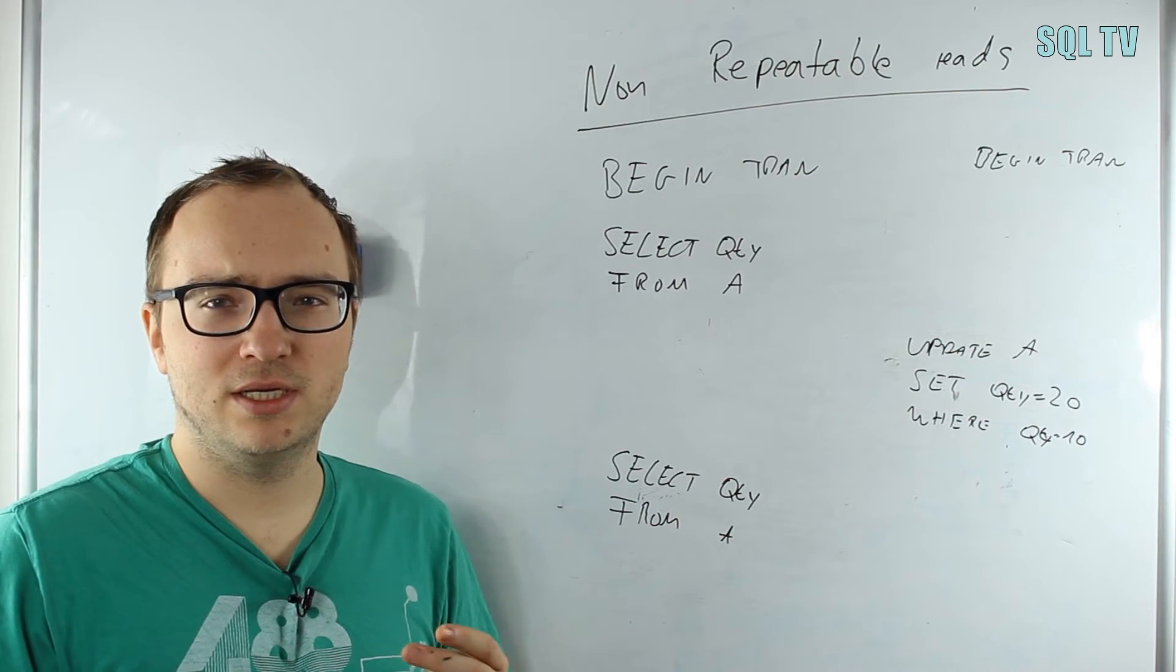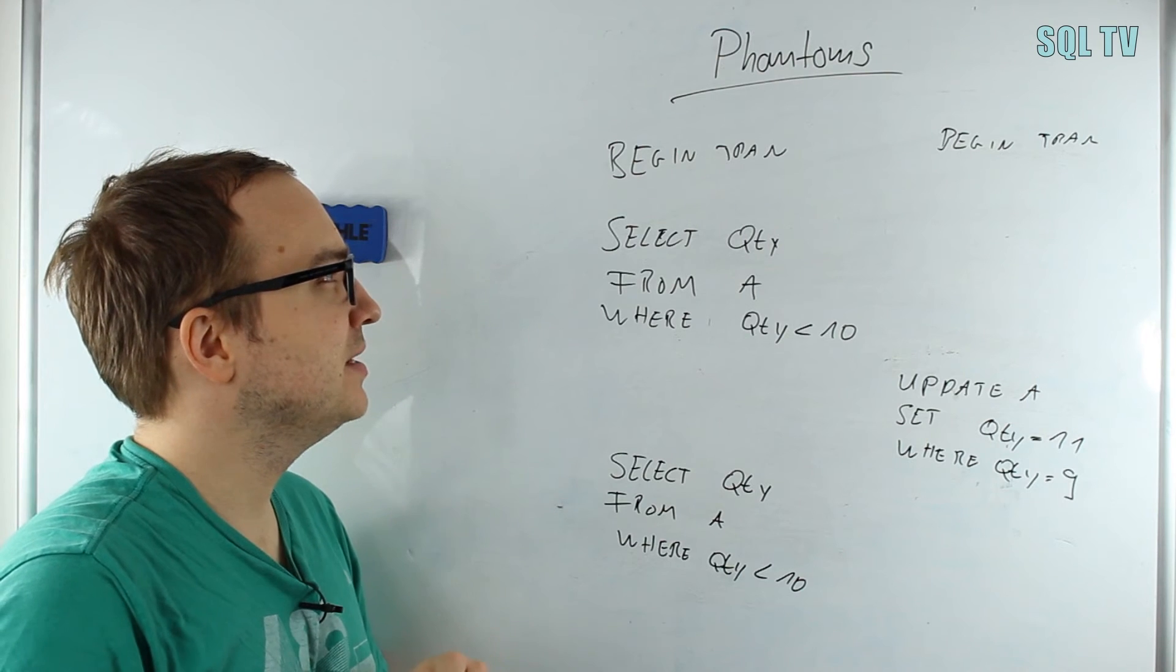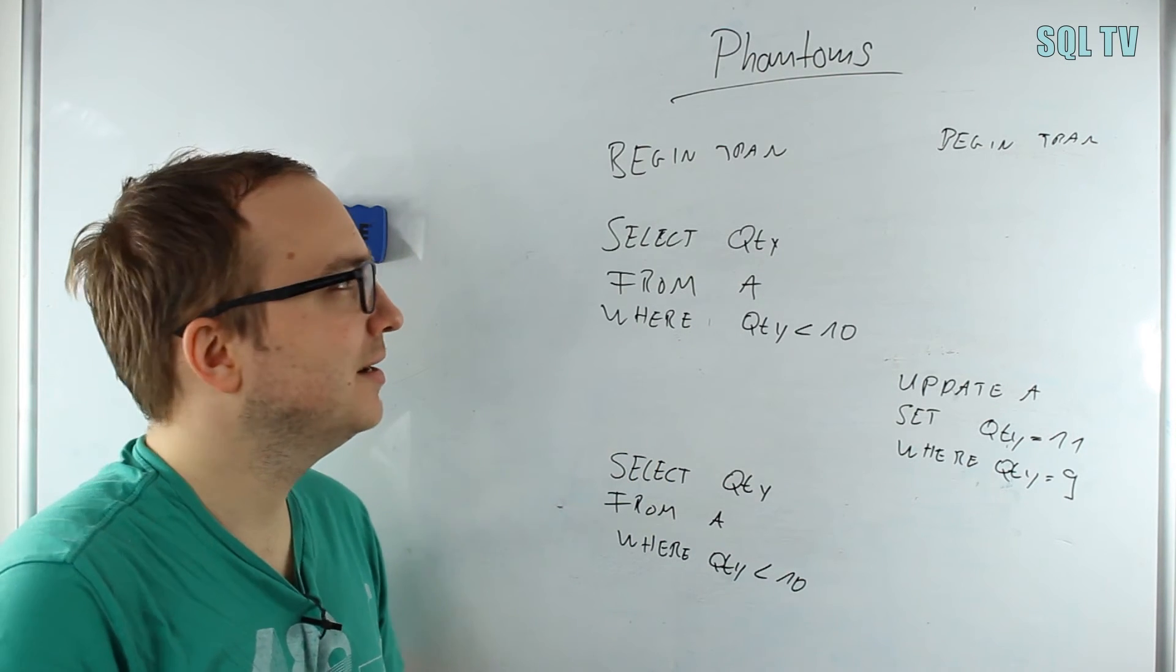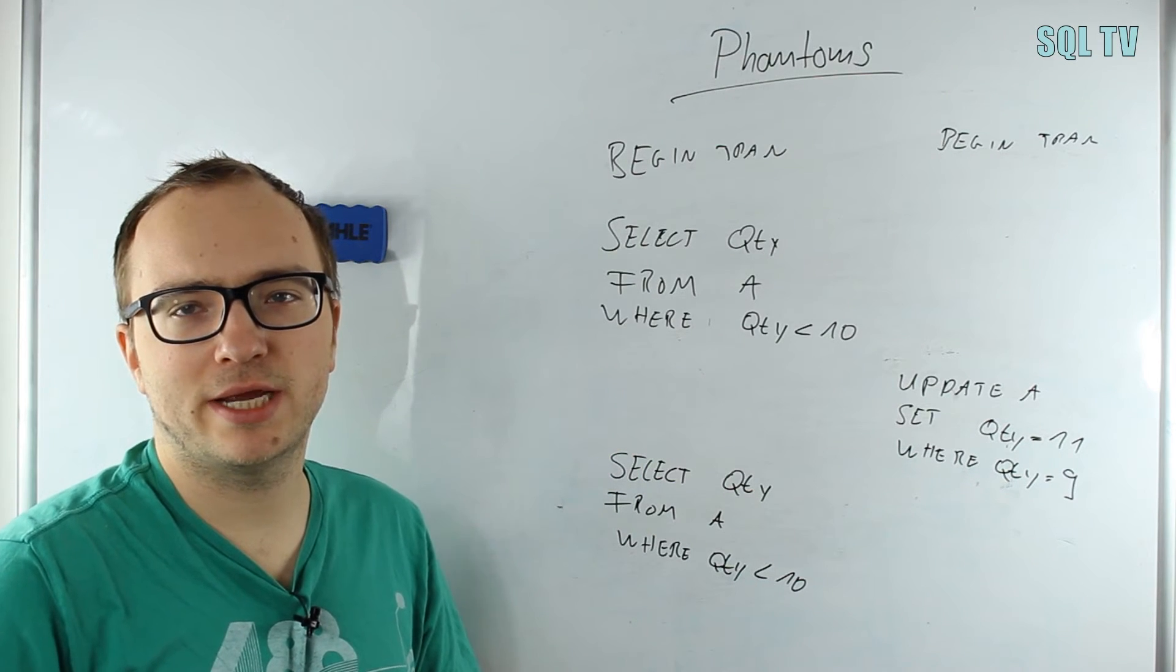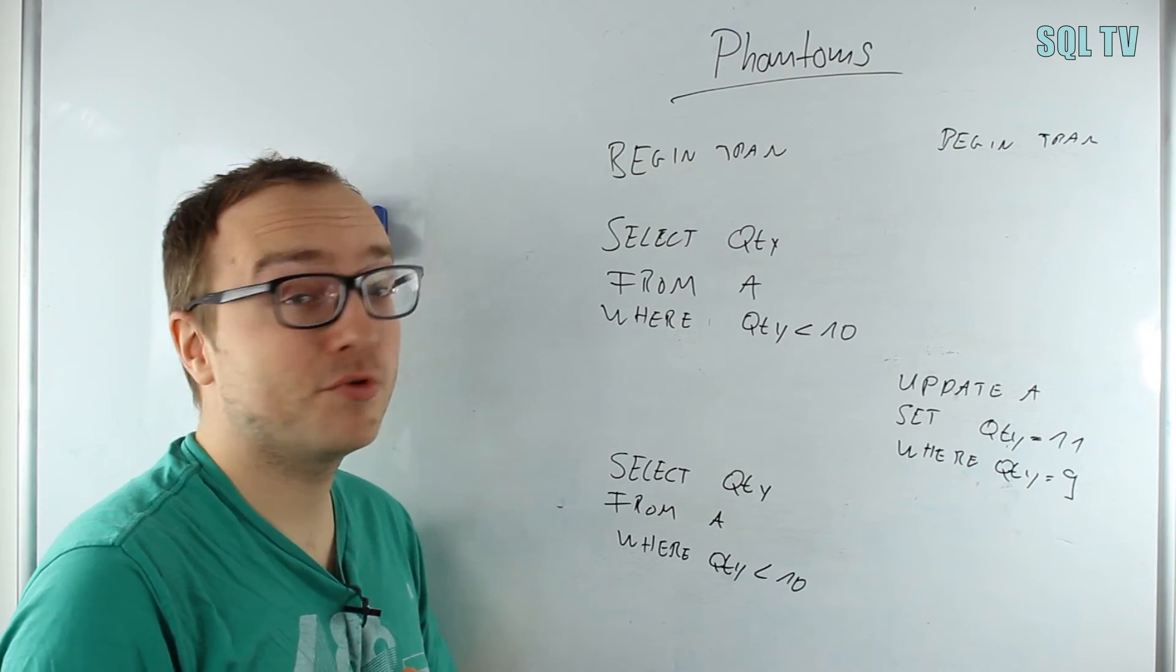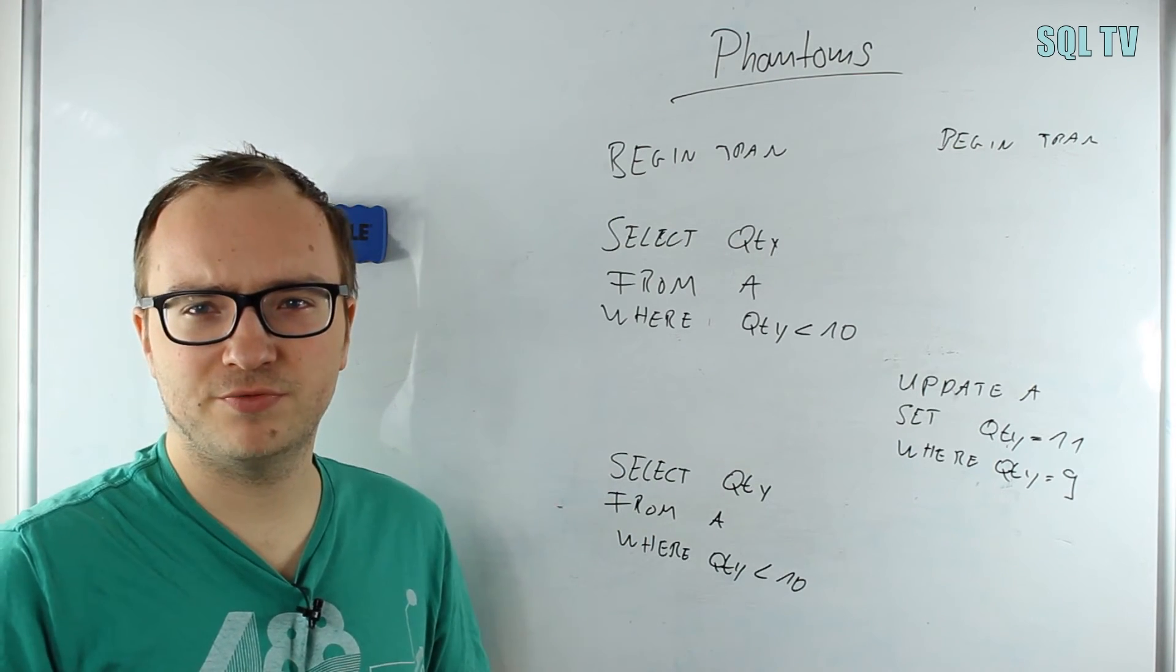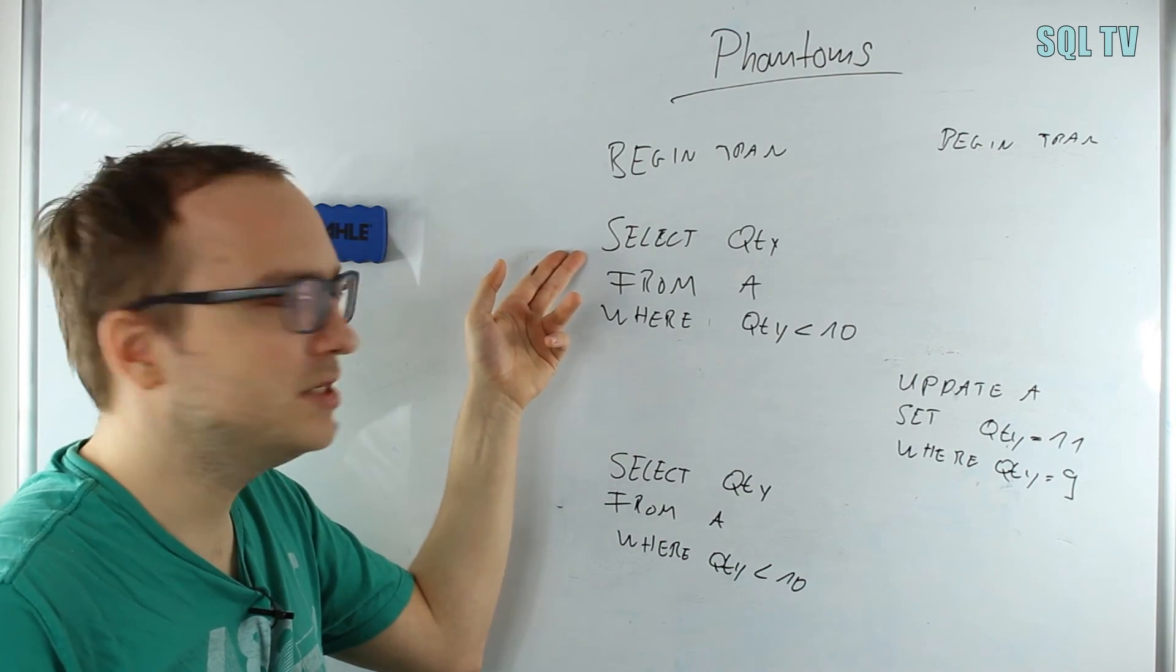This leads us to the last phenomenon called a phantom or phantom read. A phantom read means there has to be a predicate included, for instance in a WHERE clause, that limits somehow my result set. We do the same query twice in the transaction and we receive different numbers of rows. This may sound similar to non-repeatable reads, but in non-repeatable reads it was about the values of the result set, and here it's about the row numbers that are different.